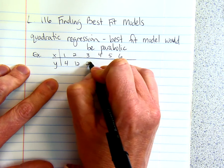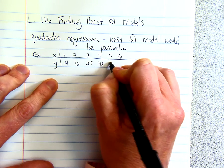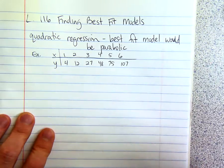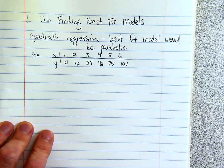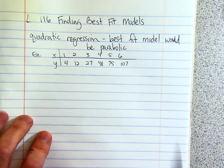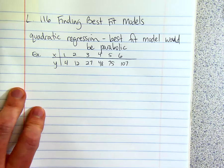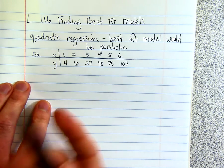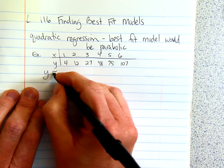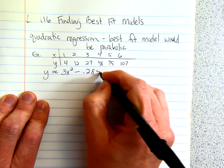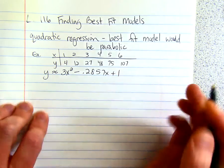4, 12, 27, 48, 75, 107. And if you were to graph them, it would kind of go up quickly, and it would look like a parabola. You can get the, instead of linear regression, you would just type on the one that says quadratic regression. And you would get approximately 3x squared minus 0.2857x plus 1.